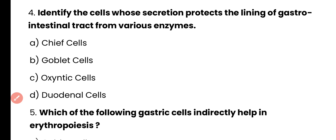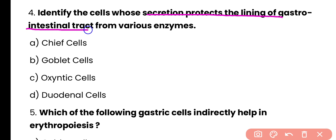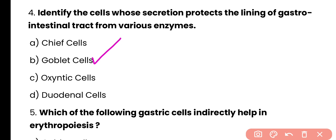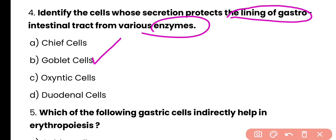Identify the cells whose secretion protects the lining of the gastrointestinal tract from various enzymes. Options: Chief cells, goblet cells, oxyntic cells, or duodenal cells. Correct answer is option B — goblet cells produce mucus, which protects the gastrointestinal tract lining from secretion of different enzymes.